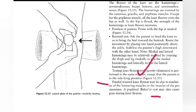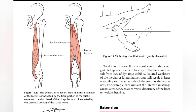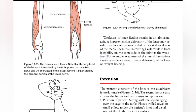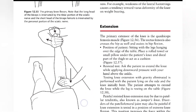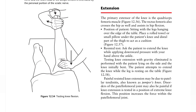If there is pain during knee flexors resistance testing, this affects the primary knee flexors: semimembranosus, semitendinosus, and bicep femoris. Weakness of the knee flexors results in abnormal gait, hyperextension deformity of the knee due to lack of dynamic stability, and isolated weakness of the medial or lateral hamstring results in knee instability on the same side of the joint as the weakness.